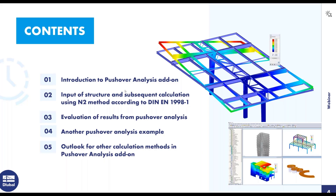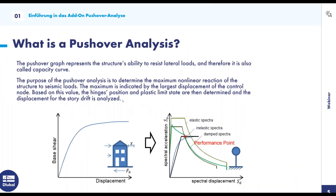First, an introduction to the Pushover analysis add-on. The Pushover graph represents the structure's ability to resist lateral forces or lateral loads, and is therefore also called the capacity curve. You have a base shear-displacement graph where you can see the nonlinear behavior of the structure — with a first part that is nearly linear, and then a part which is nonlinear. We recalculate this graph to a spectral acceleration vs. spectral displacement graph, where we get the performance point of the structure for an elastic spectrum resulting from the Pushover analysis.